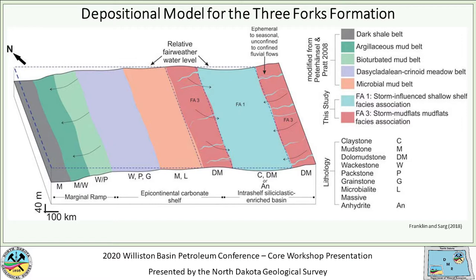Franklin and Sarg (2018) interpreted the Williston Basin as an intra-shelf siliciclastic-enriched basin bordered by storm mudflats. They proposed a variable connection with the open ocean that was restricted at times by the Sweetgrass Arch, and noted trace fossils or burrows distinctive of perhaps a marine influence within at least the upper portions of the Three Forks, becoming less common moving down in section. The laterally equivalent units to the northwest — the Wabamun Group and Palliser formations — have a more open marine depositional setting and are more purely carbonate versus the mixed carbonate-siliciclastic system of the Three Forks.